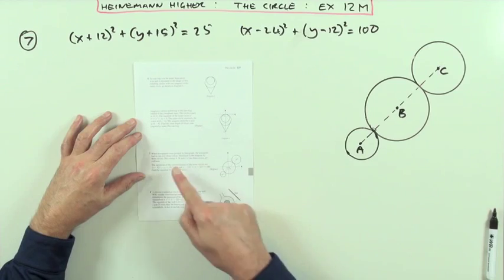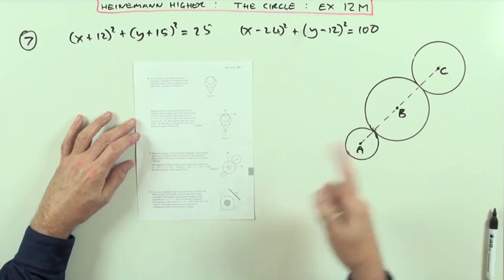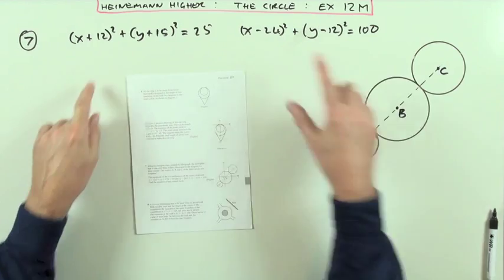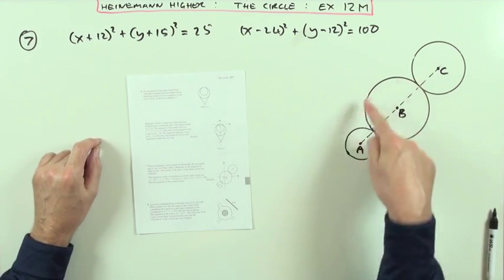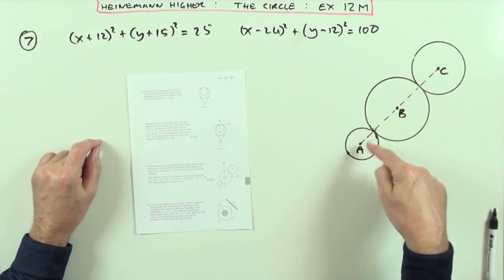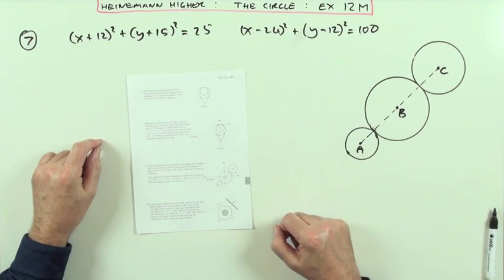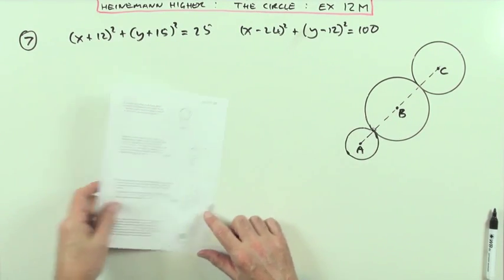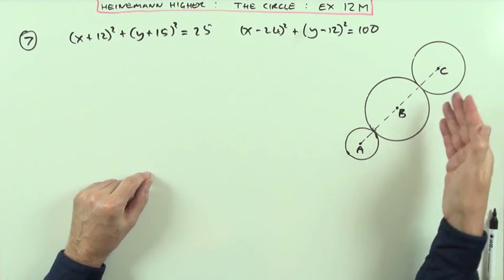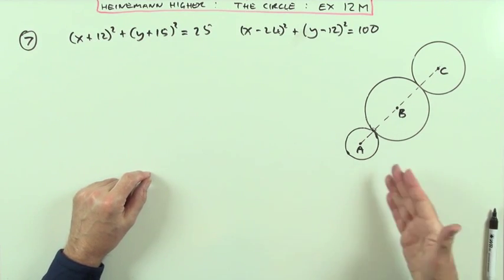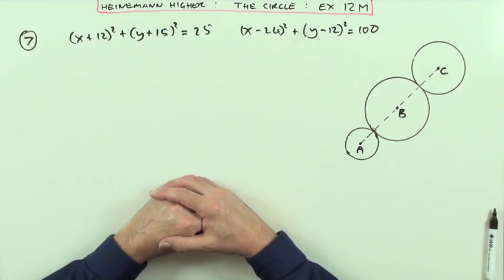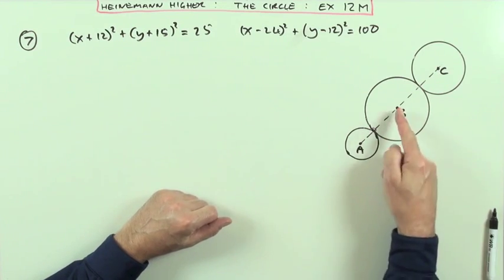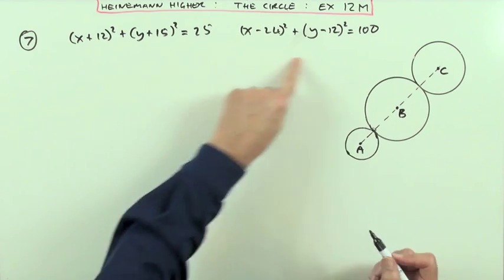This is a higher question. The diagram speaks for itself — you're given the equations of two outer circles, and you need to find the equation of the inner circle where the centers are collinear and the circles are externally tangent to each other. This means finding the geometrical features of the diagram to work out distances, since you'll know the equation of the circle once you know its radius and the position of its center.